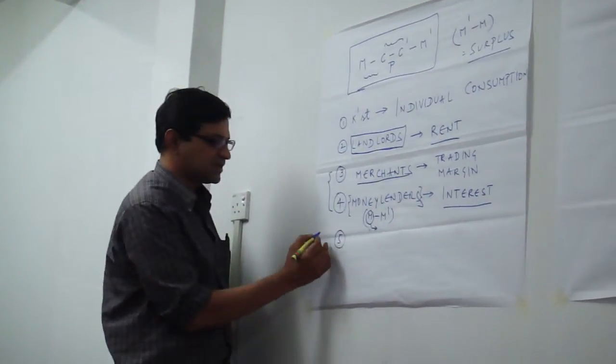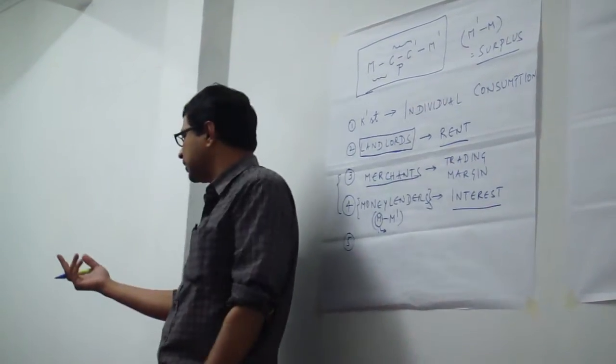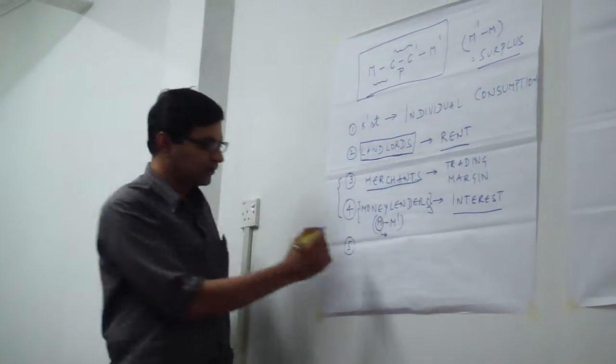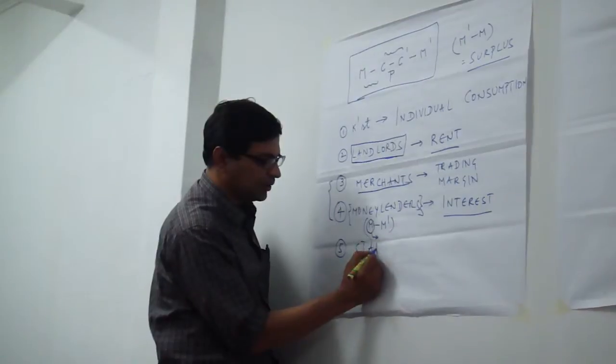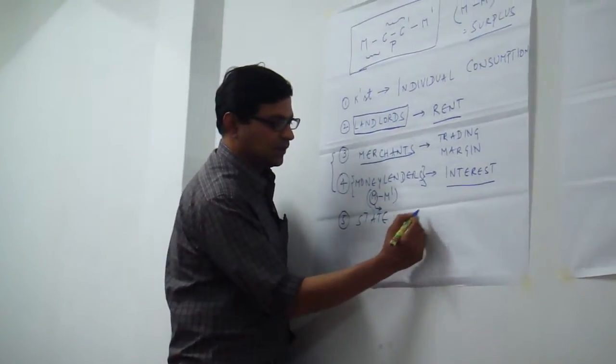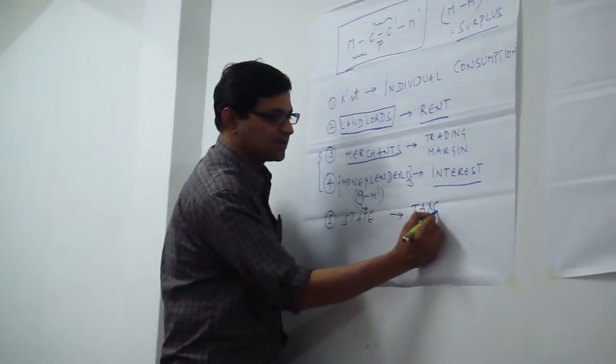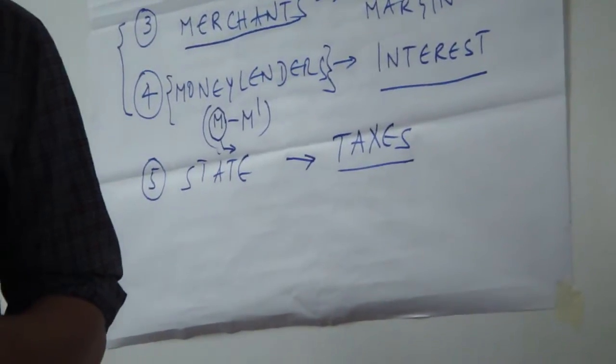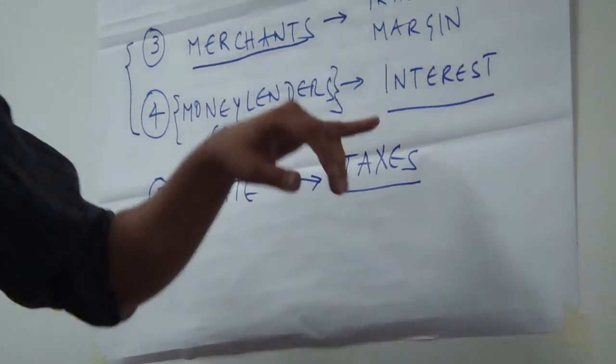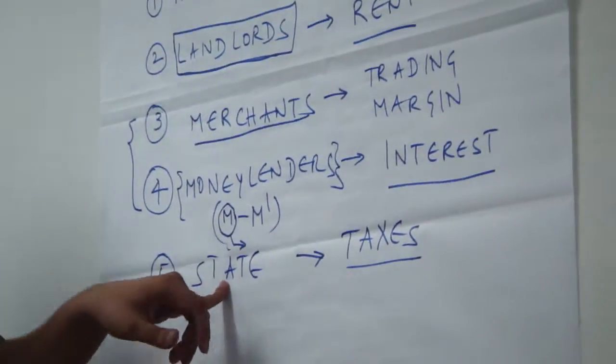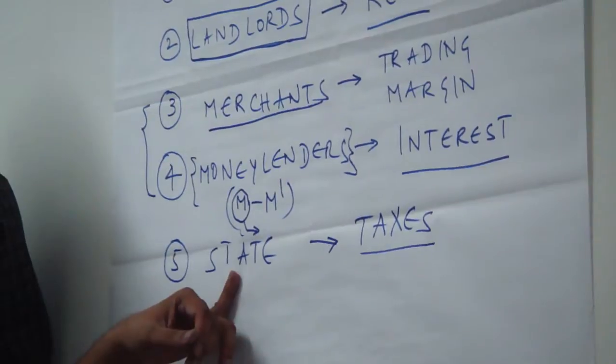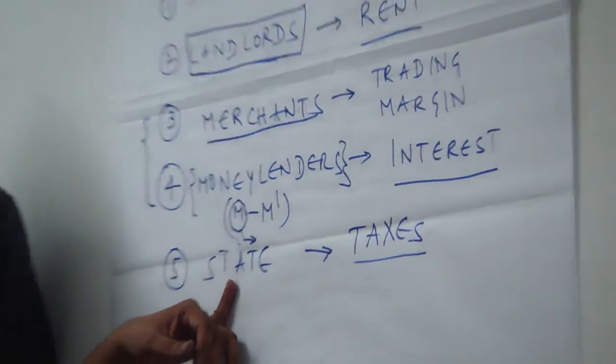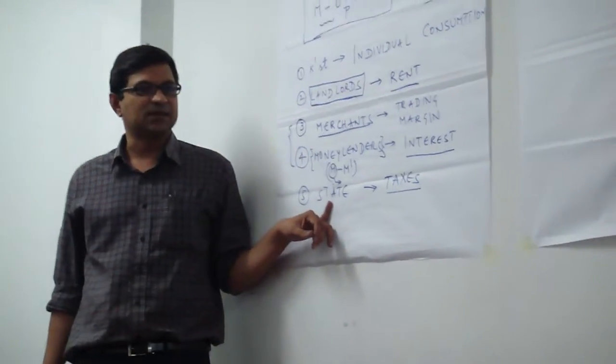Apart from these people, who else gets a cut? Somebody mentioned that government, the state or the government gets part of the surplus in the form of taxes, what you call corporate taxes. Corporate taxes are paid to the government. And why do the capitalists pay the state or the government?